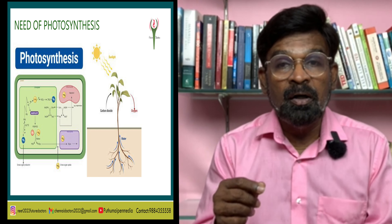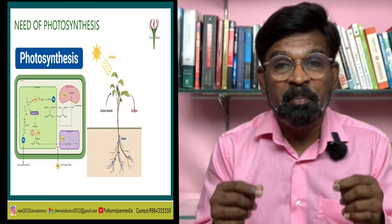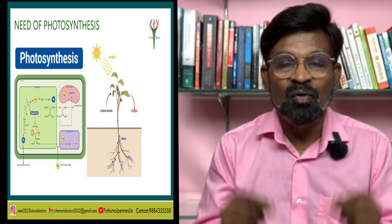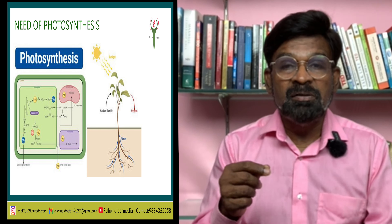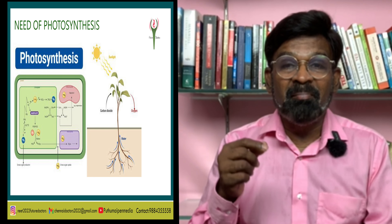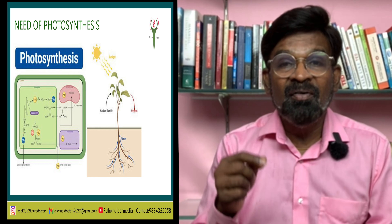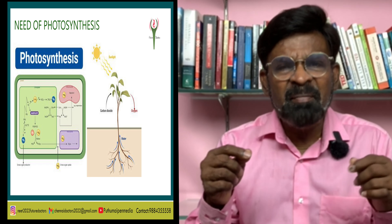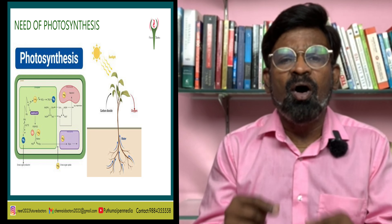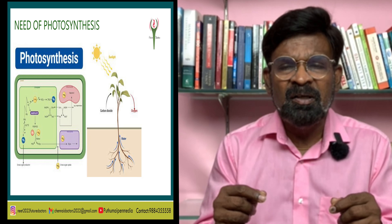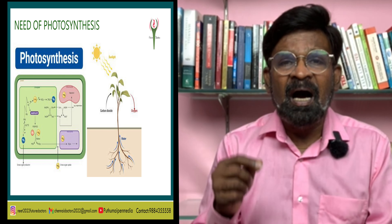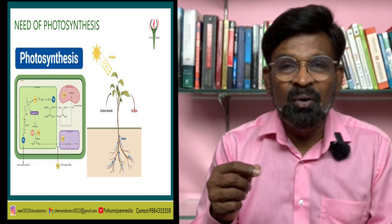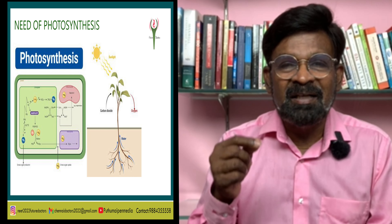Animals, on the other hand, are heterotrophic in nature. They either obtain their food directly from plants, that is herbivores, or indirectly depend on herbivores for their food, that is carnivores. Saprophytes are dependent on dead and decaying matter for their food — for example, fungi and some bacteria. Thus, all food that is respired for life processes ultimately comes from photosynthesis.